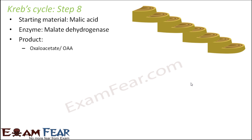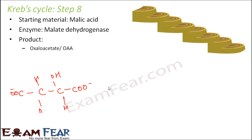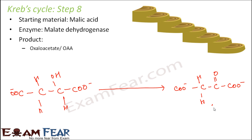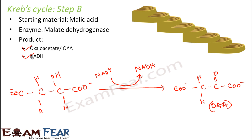Malic acid is a four-carbon compound. In the presence of malate dehydrogenase, it forms another four-carbon compound — oxaloacetic acid — which has a double bond. During this process, NADH is also released. So the products formed are oxaloacetic acid and NADH, and NADH is further utilized for ATP synthesis.